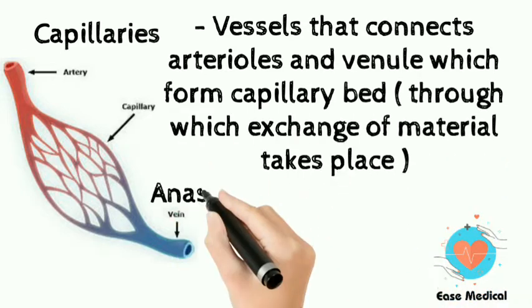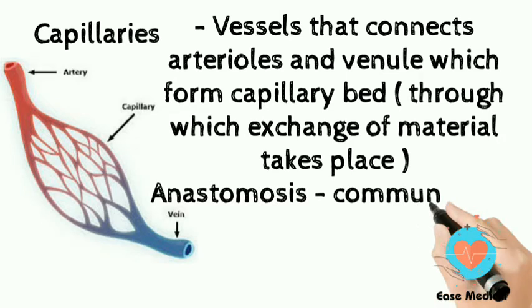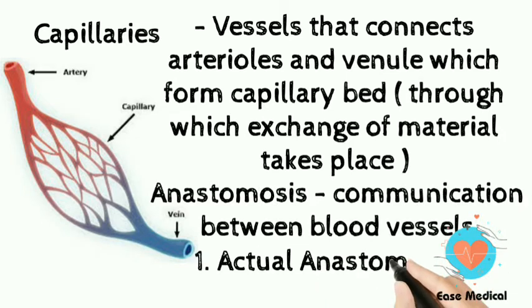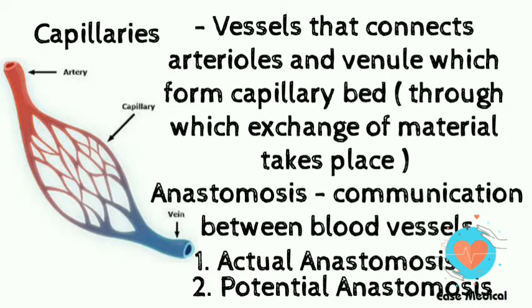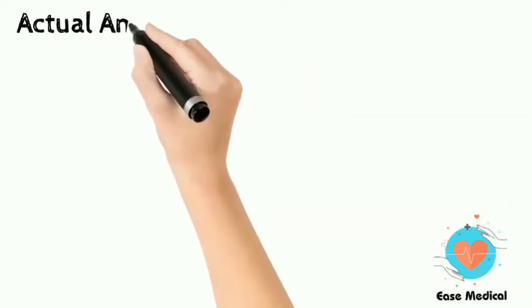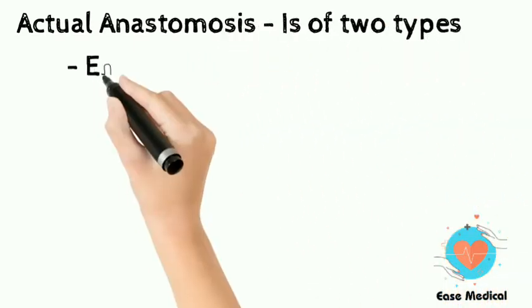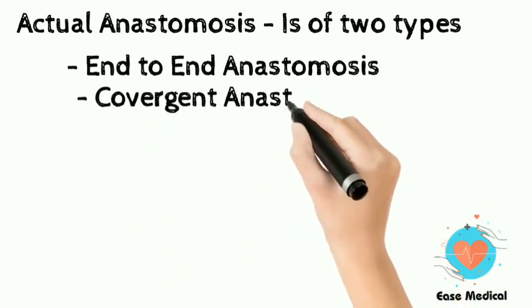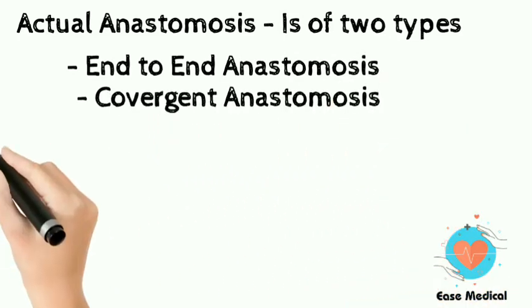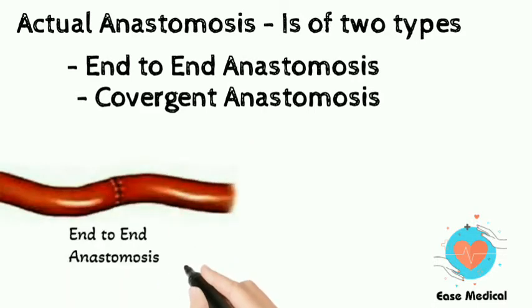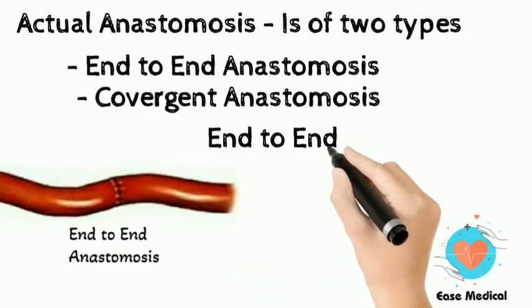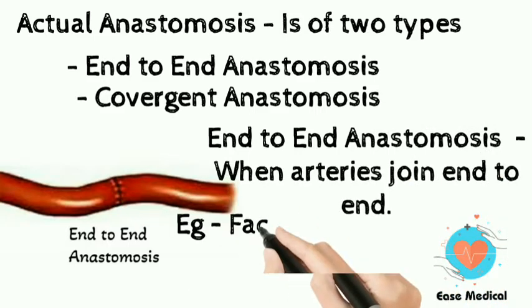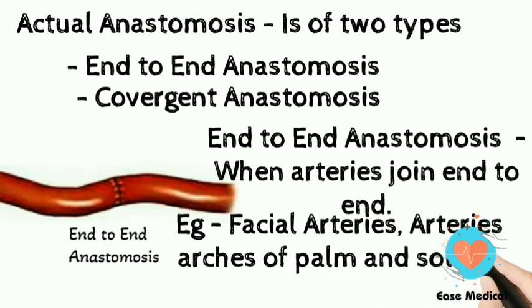Anastomosis is a communication between blood vessels. Types of anastomosis are actual anastomosis and potential anastomosis. Actual anastomosis is of two types: end-to-end anastomosis and convergent anastomosis. End-to-end anastomosis is when arteries join end-to-end; examples include facial arteries, arterial arches of the palm and soles, and labial arteries.